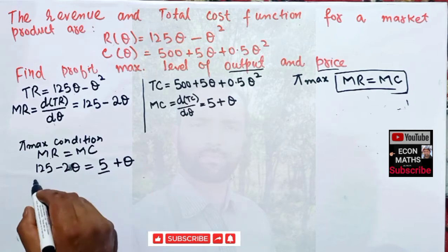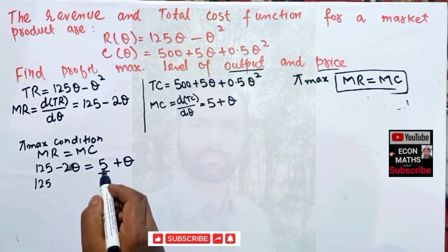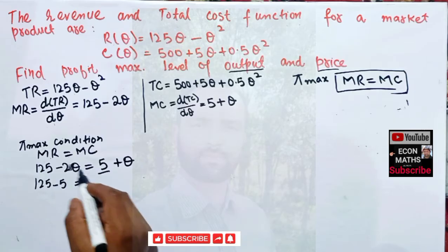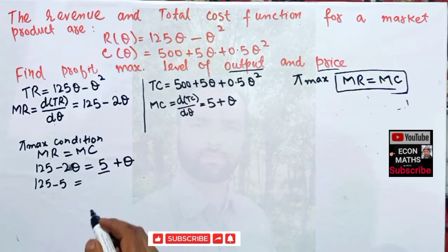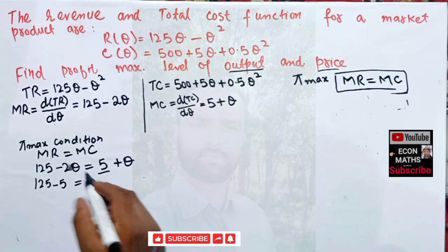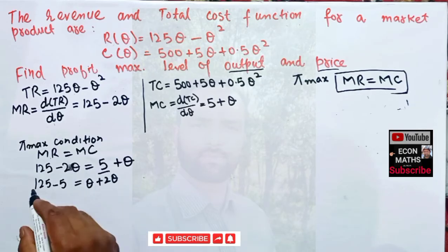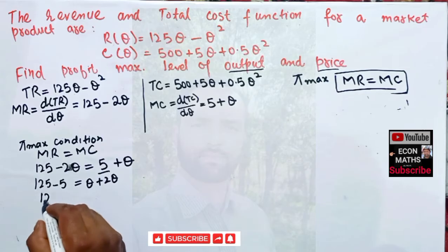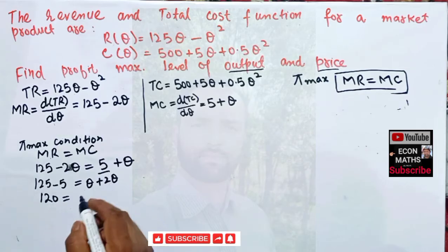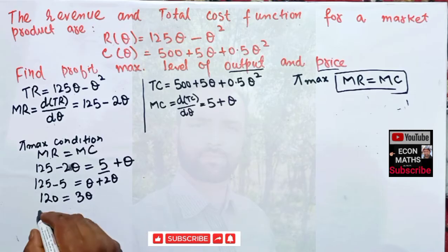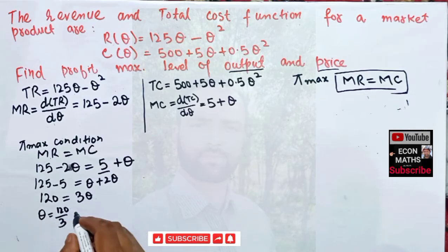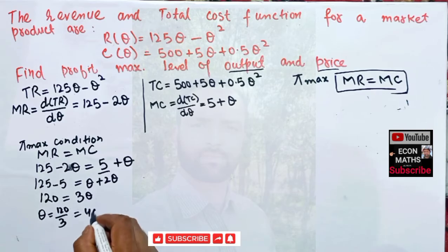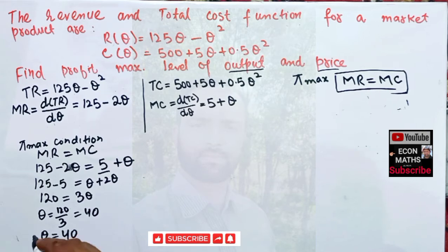Rearranging: 125 minus 5 gives 120 on the left-hand side, and 2Q plus Q gives 3Q on the right. So 3Q = 120, which gives Q = 120 divided by 3 = 40. The equilibrium profit-maximizing level of output is Q = 40.